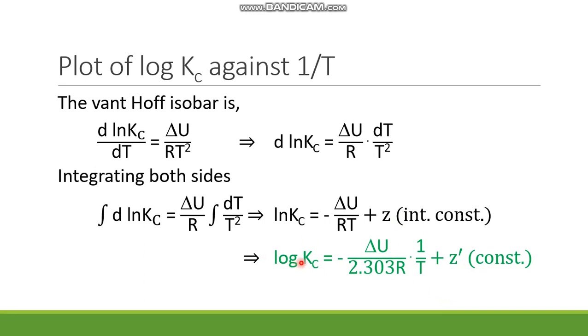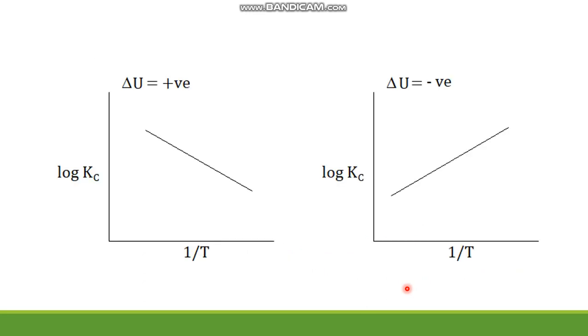If log Kc is plotted in the y-axis and 1 by T is plotted in the x-axis, then depending upon the positive or negative value of delta U, it will give either a positive slope straight line or a negative slope straight line. If delta U is negative, then the slope of the straight line would be positive. And if delta U is positive, then the slope of the straight line would be negative.